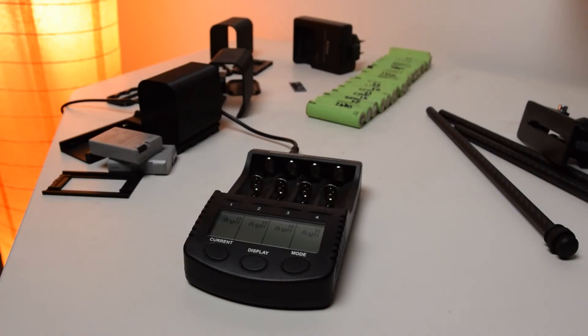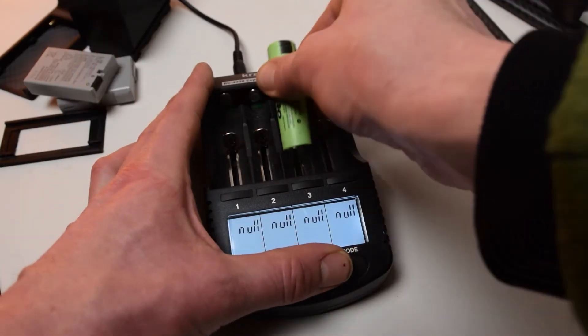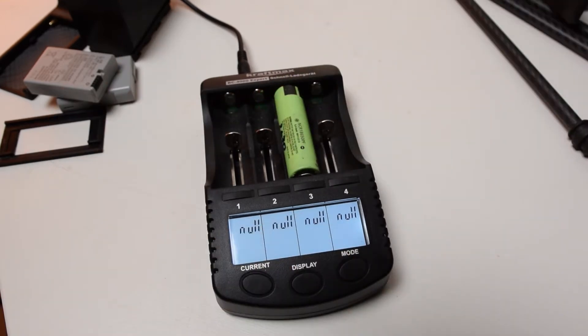If you plan to recycle used cells for this project, make sure to combine only cells with similar capacity and internal resistance. Many chargers for 18650 cells allow you to measure those values.